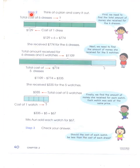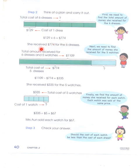Step two: think of a plan and carry it out. First we need to find the total amount of money she received for six dresses. For one dress she received $129, so 129 multiplied by six equals 774. She received $774 for six dresses.